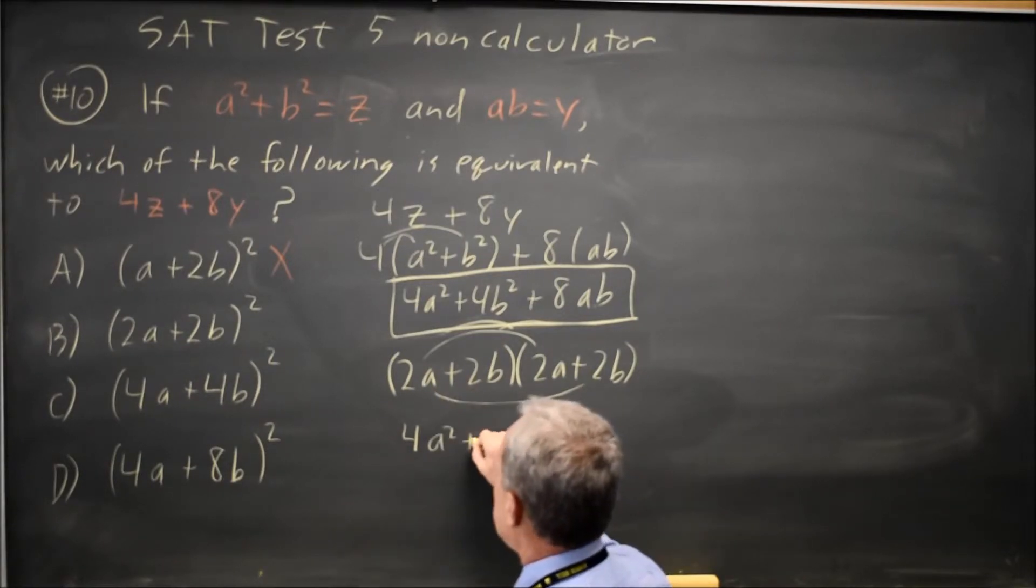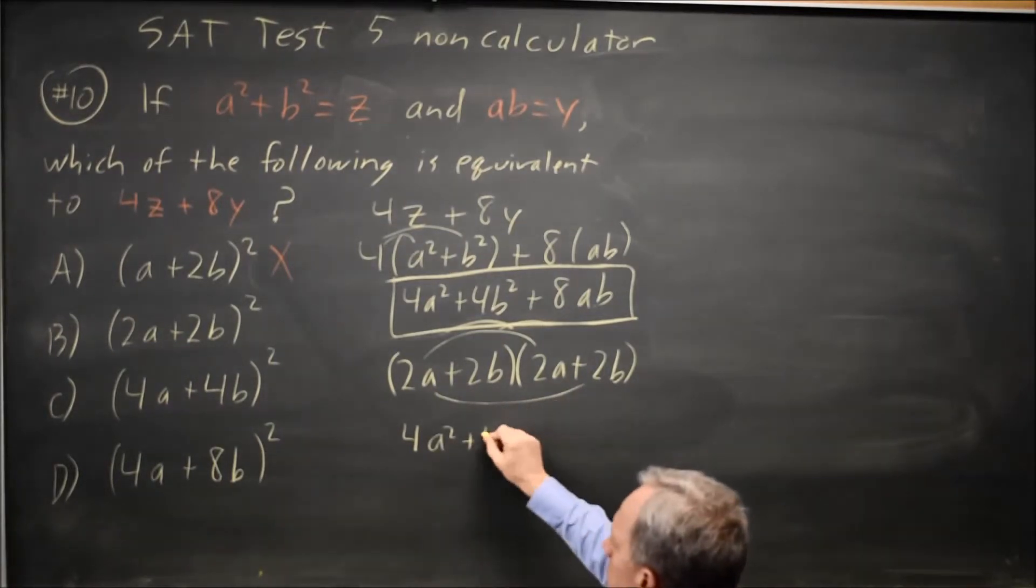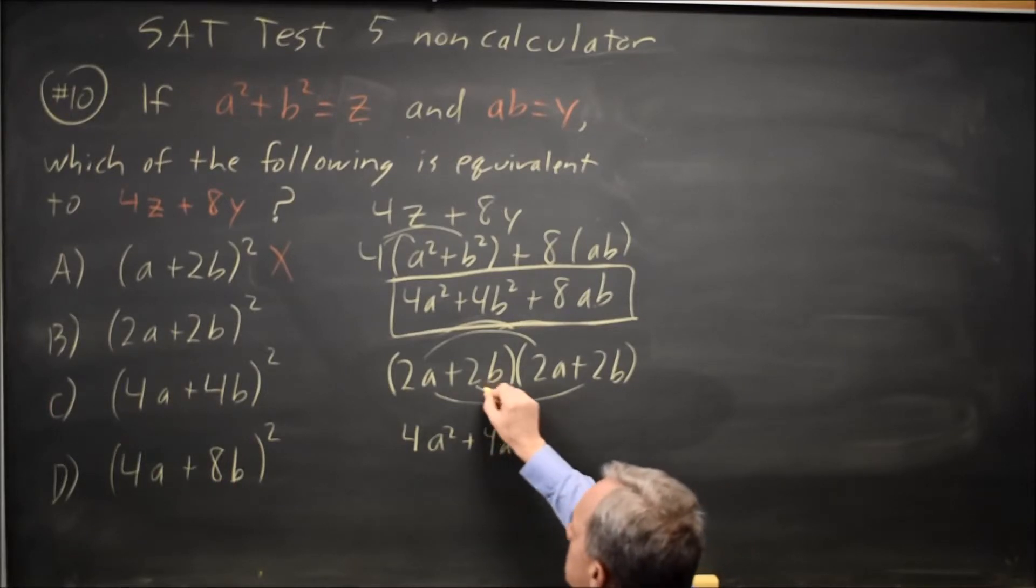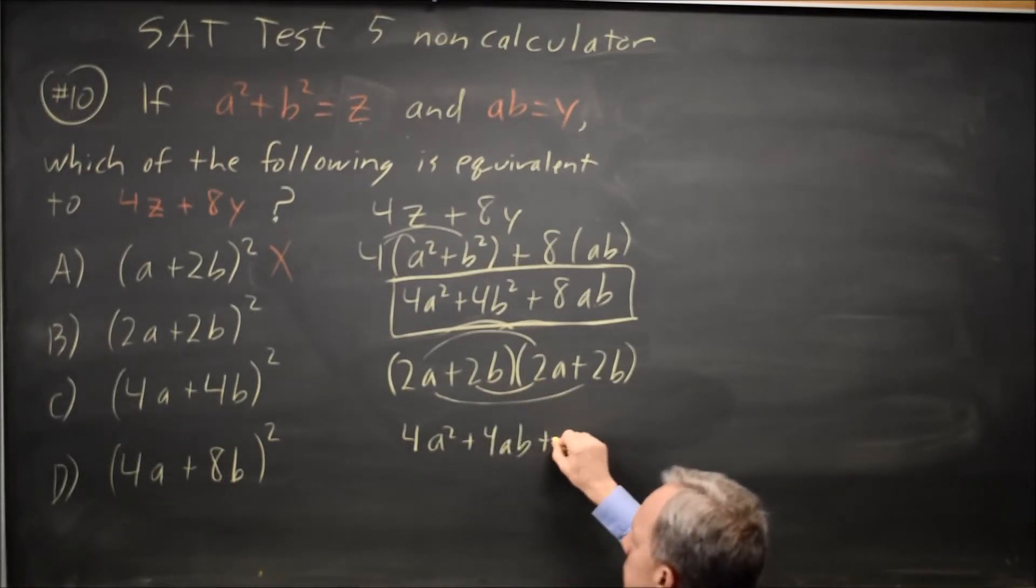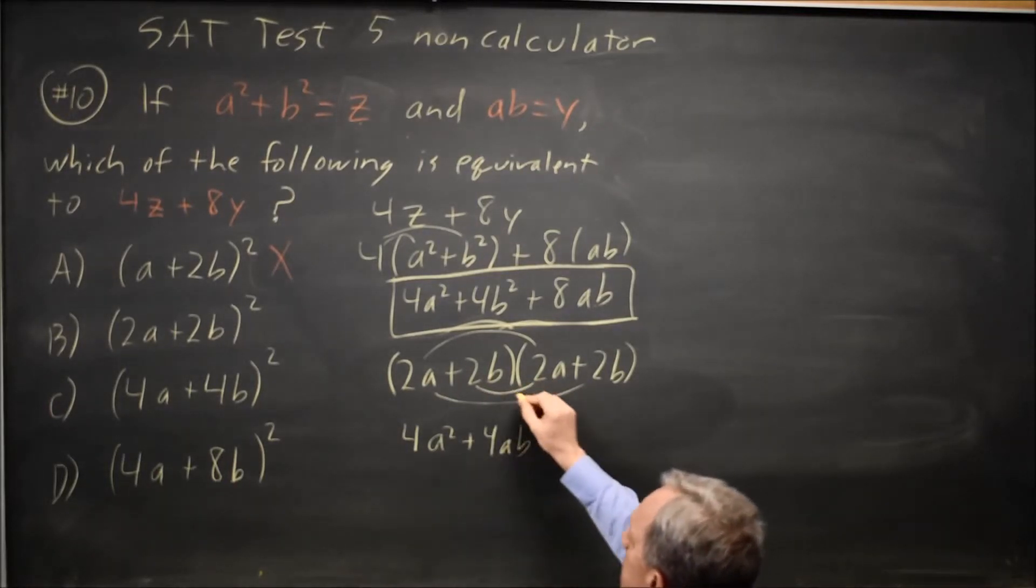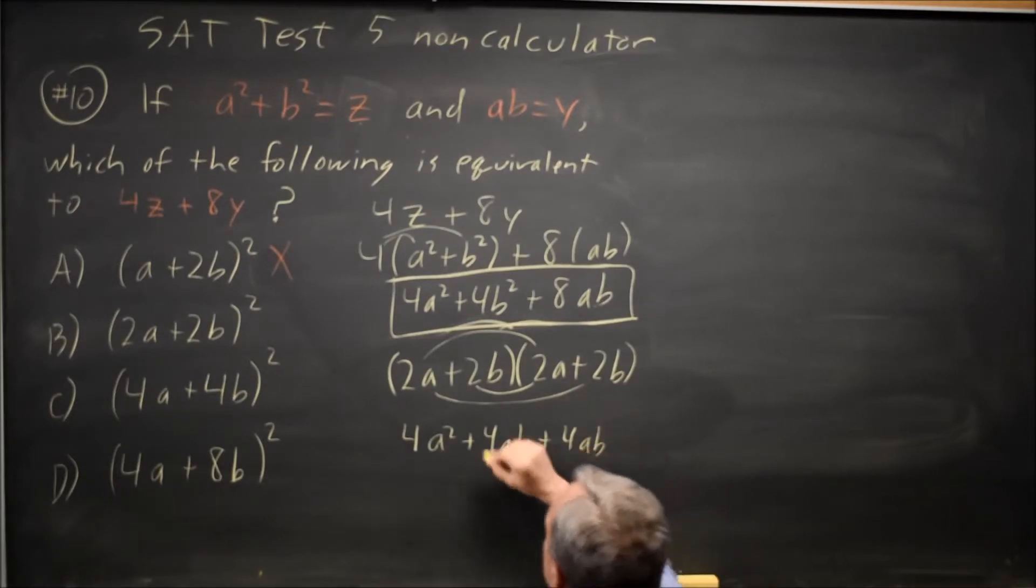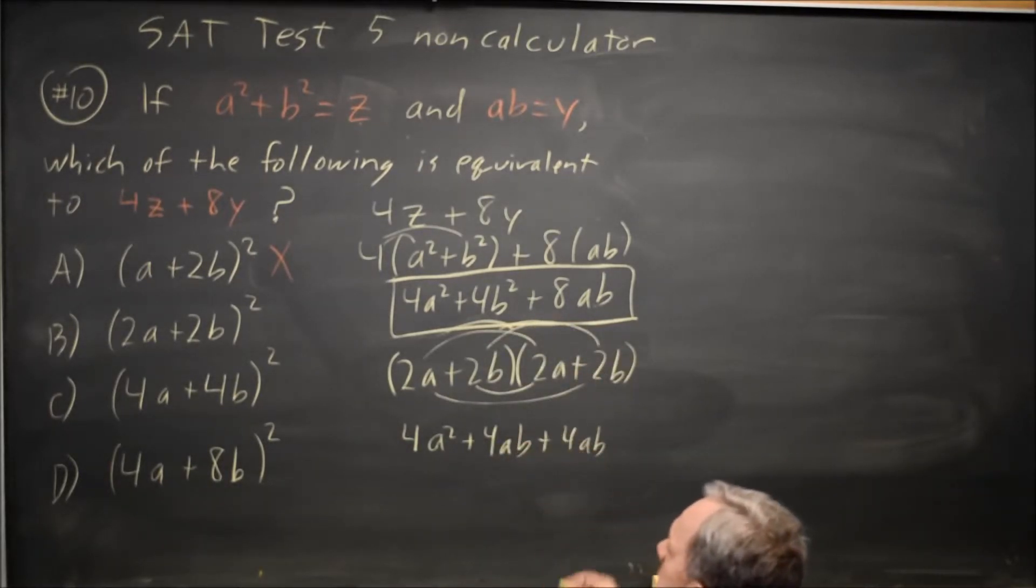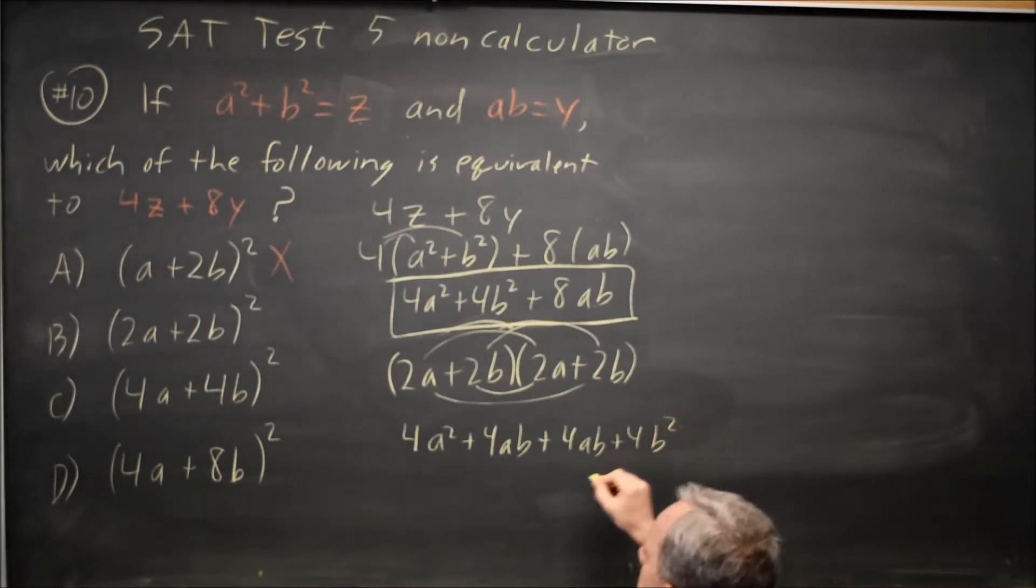Outside, 2a times 2b is 2 times 2 is 4 ab. Inside, 2b times 2a is 2 times 2 is 4 b times a is ab. Last times last, 2b times 2b is 2 times 2 is 4. b times b is b squared.